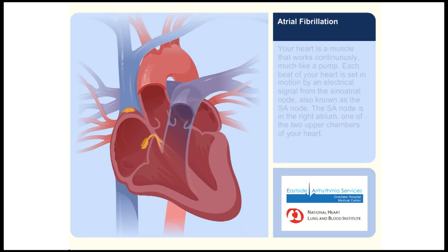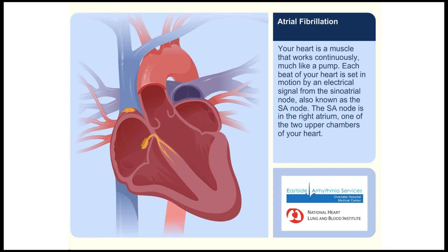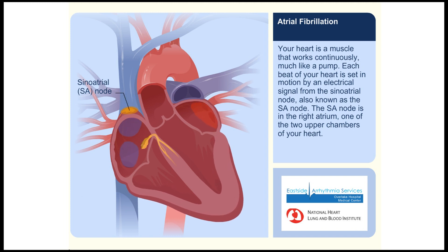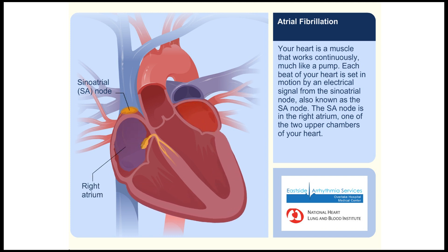Your heart is a muscle that works continuously, much like a pump. Each beat of your heart is set in motion by an electrical signal from the sinoatrial node, also known as the SA node. The SA node is in the right atrium, one of the two upper chambers of your heart.